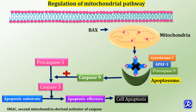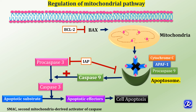The mitochondrial pathway is regulated by the anti-apoptotic gene BCL2, which inhibits BAX and thus prevents cytochrome C leakage from mitochondria into the cytosol, inhibiting apoptosis. IAP can also inhibit both pro-caspase 3 and pro-caspase 9. This inhibitory effect of IAP is stopped by the protein SMAC released from mitochondria.